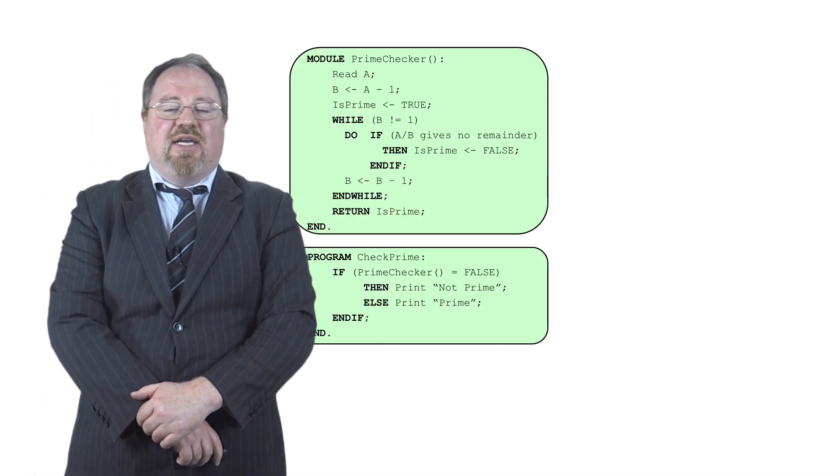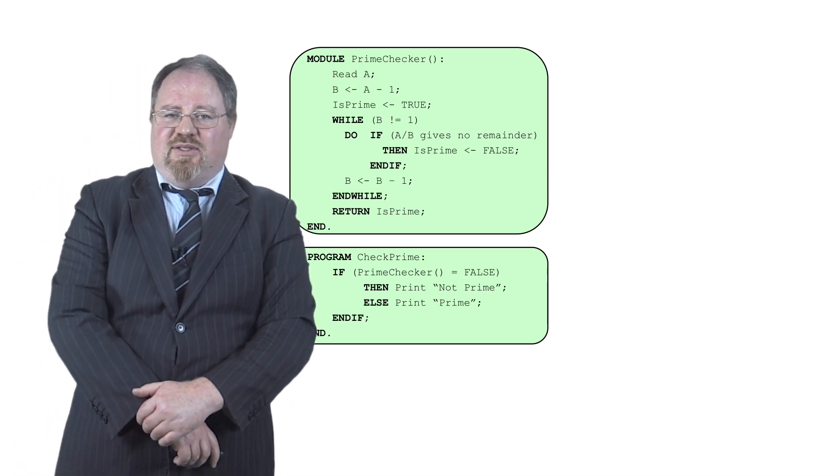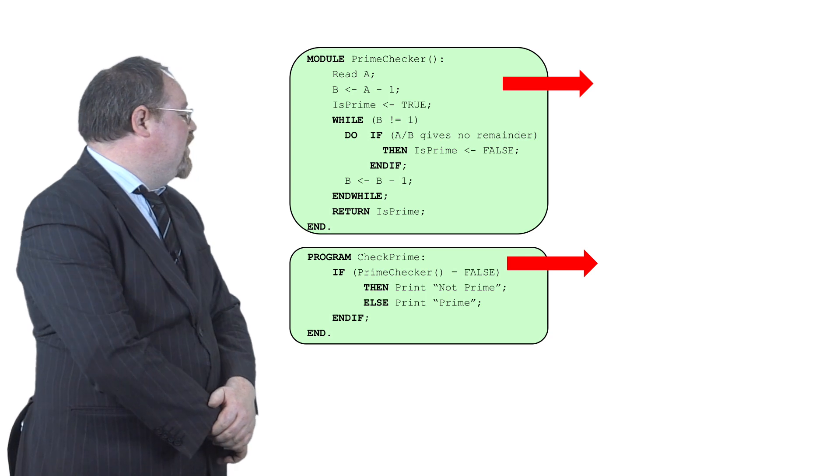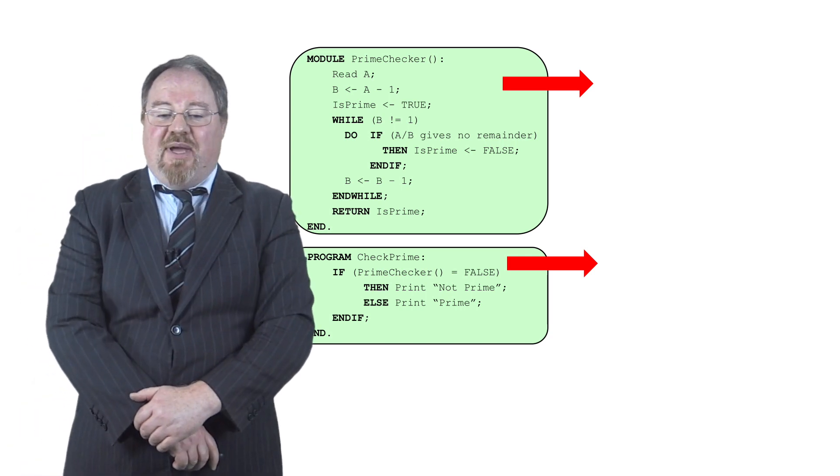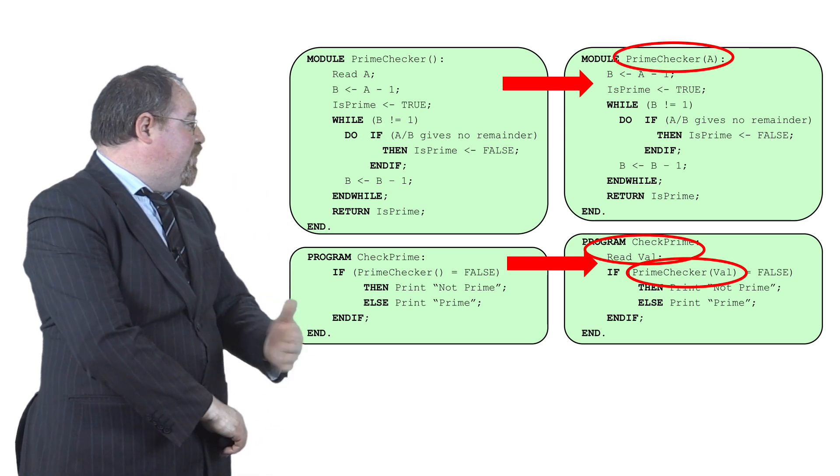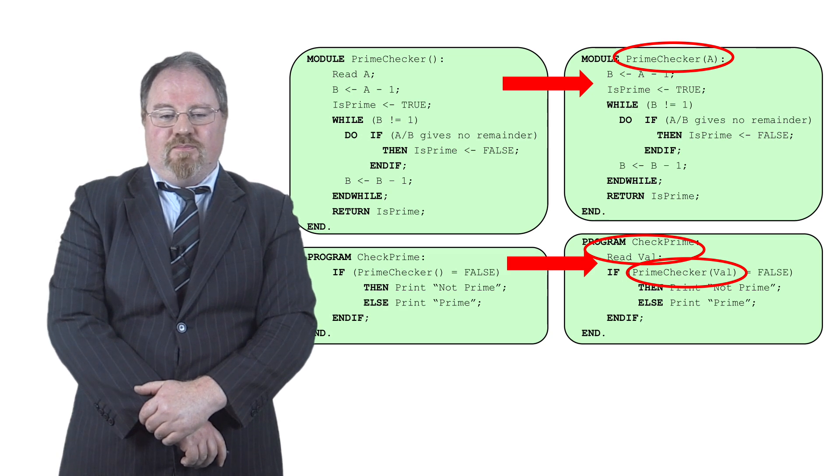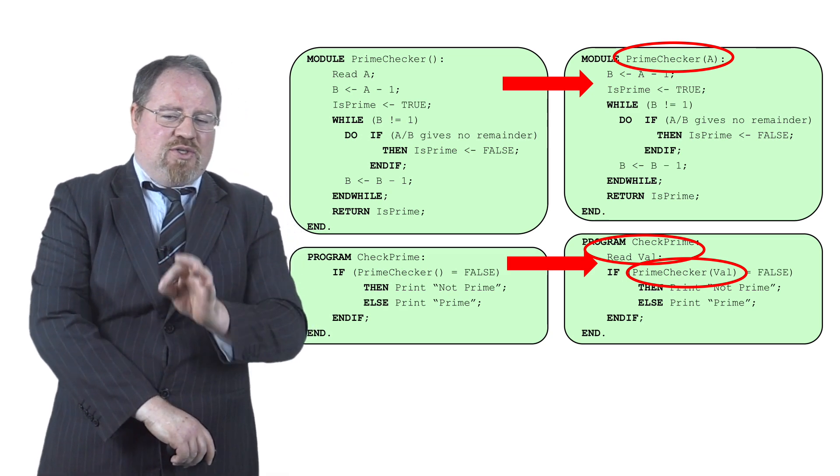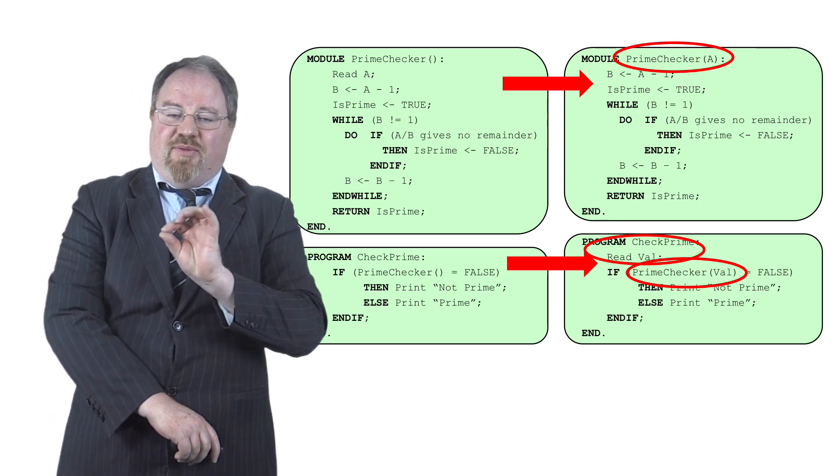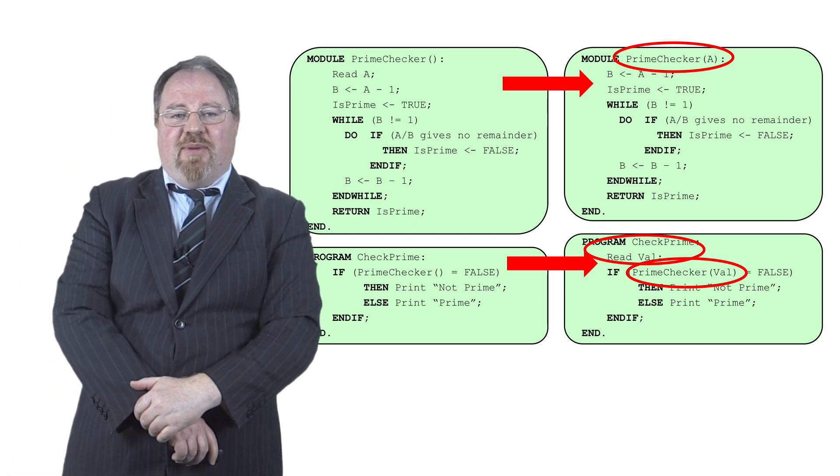Well, we'd do that by taking our existing code and then moving the read part from the module prime checker into the main part. So now we've got read value and then we check if prime checker for that value is true or false. So the key changes there is we've moved the read value from the module to the main program and we've changed how we call the main program.